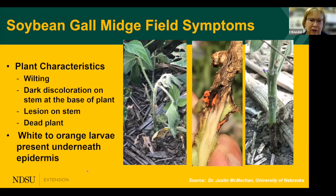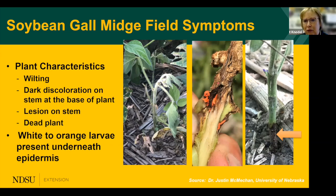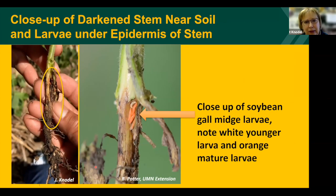When you're out in the field, watch for symptoms of soybean gall midge infestation: wilting, darkening at the base of the stem. If you pull the plant up and remove the outer epidermis, you may see brightly colored orange larvae underneath. Or you may see a lesion, or in severe situations, a dead plant. Here's a close-up showing the younger white larvae versus the older, more mature larvae that are getting closer to dropping off the plant.